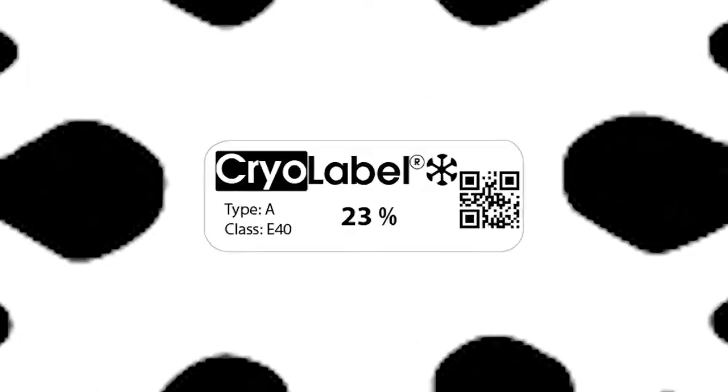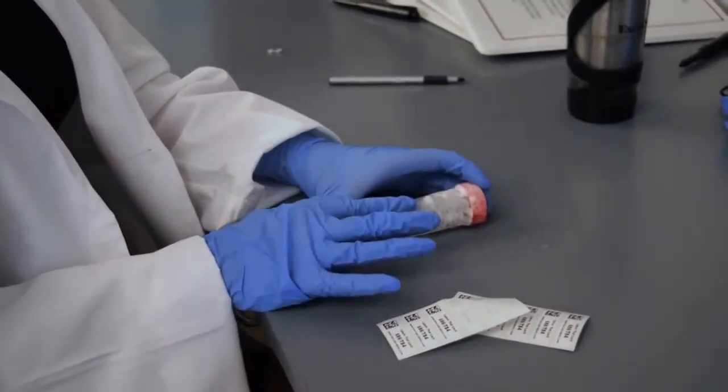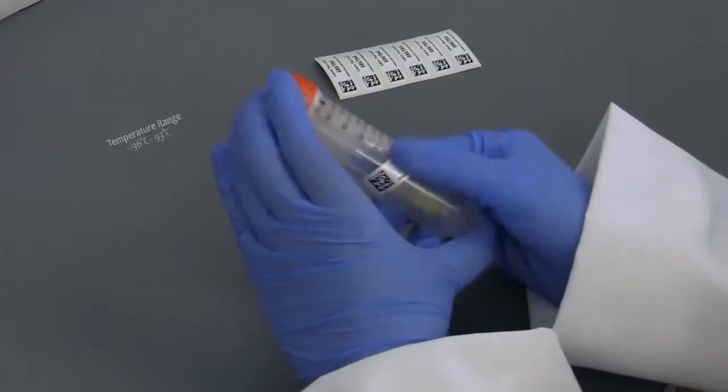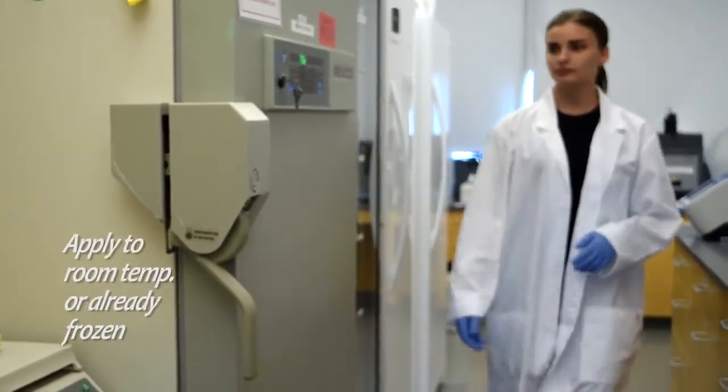It might be time for your lab to upgrade to cryolabels, the original pressure sensitive label for marking cryogenic storage. Cryolabels can be used on containers that are stored as low as negative 196 Celsius. They can be applied to regular or already frozen containers.